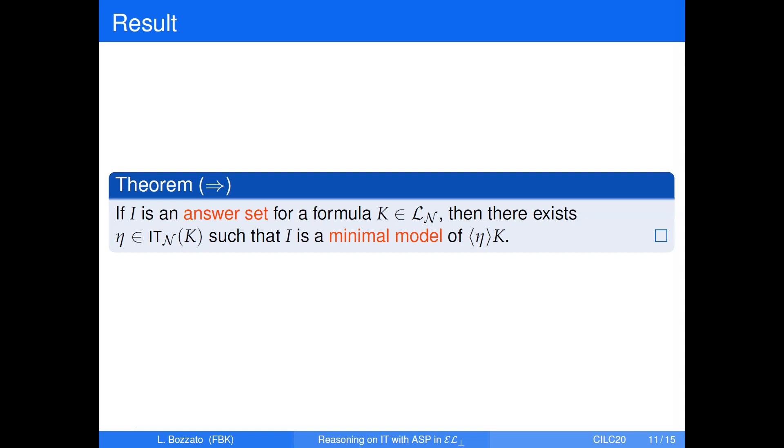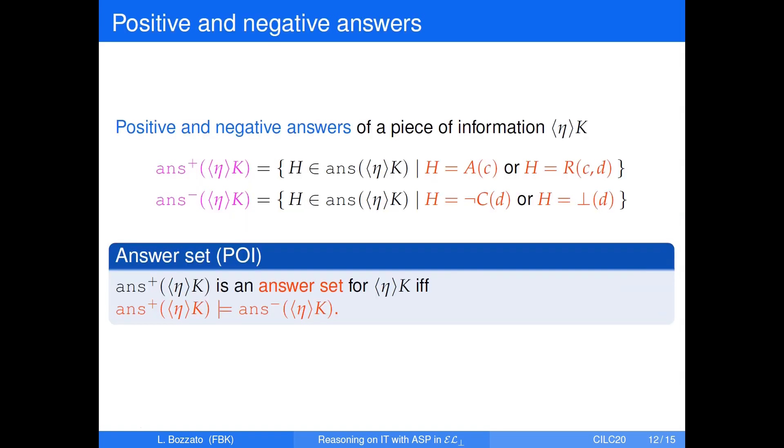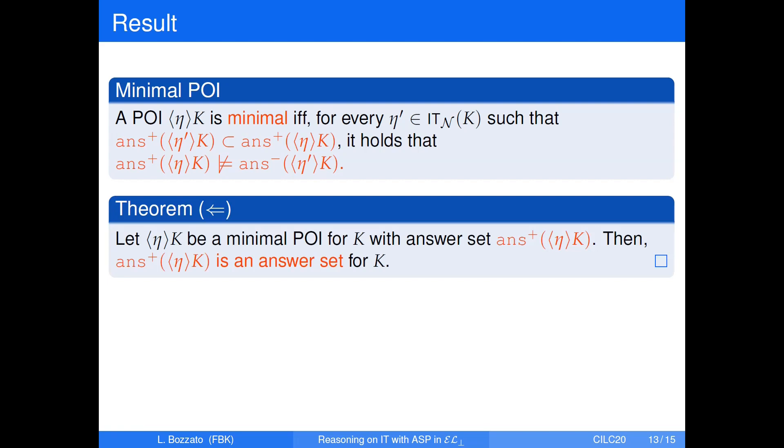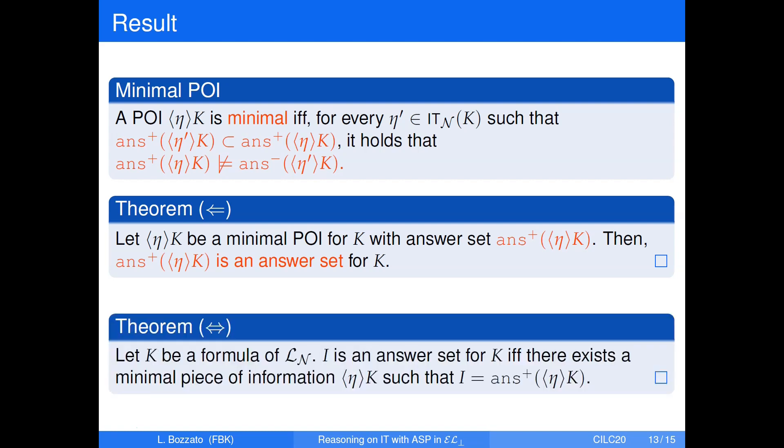We can then consider answers of pieces of information that are set of atomic formulas that represent the information content needed to justify the truth of a piece of information. In fact, we can prove that a formula is realized in a model if the model verifies these sets of formulas. From this, we can prove one direction of our main result. If I is an answer set for a formula K, then there exists an information term such that I is a minimal model for this piece of information. To show the other direction, we have to separate the positive information in answers from the negative constraints.